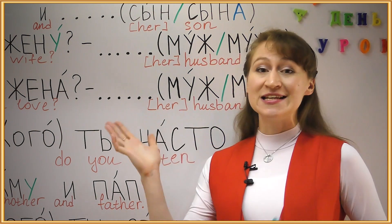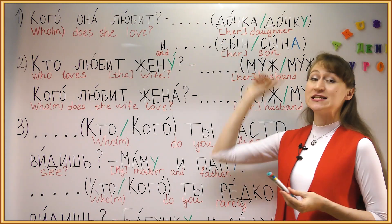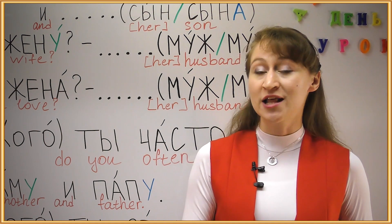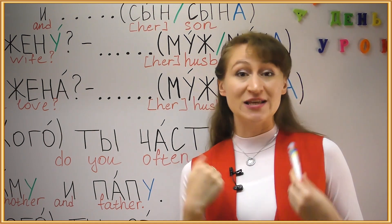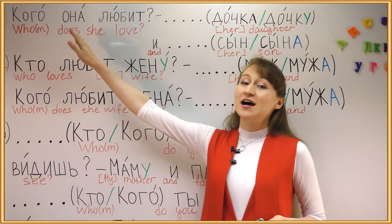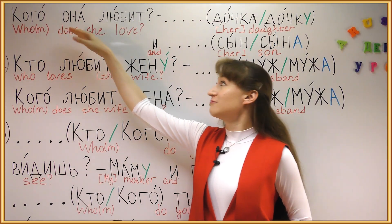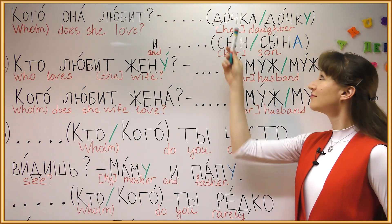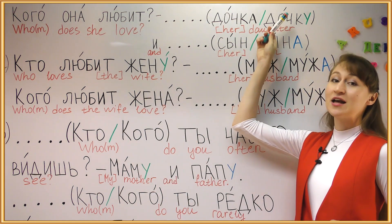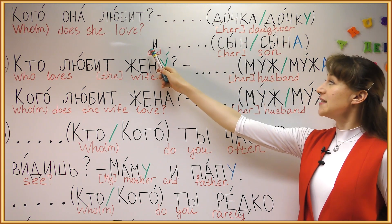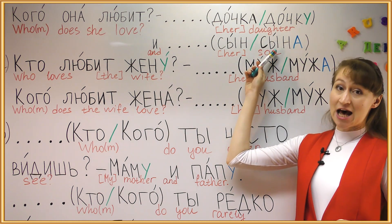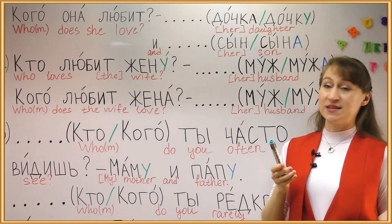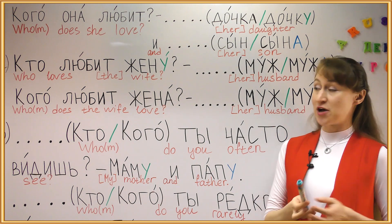As usual, please choose one of the two options in brackets. Pause the video, say your answer out loud, then listen to me say the correct answer. What does she love? Who does she love? The daughter and the son — object forms. The daughter is a feminine noun, the son is a masculine noun.